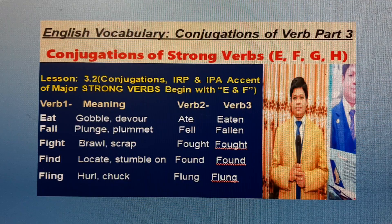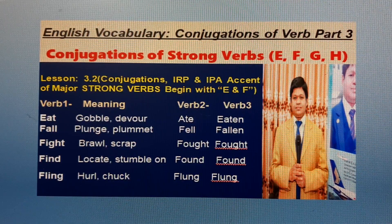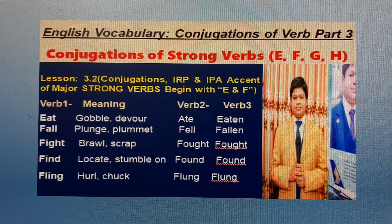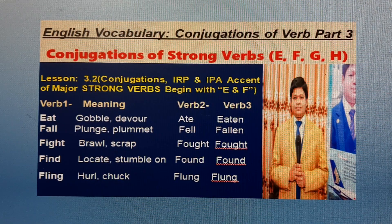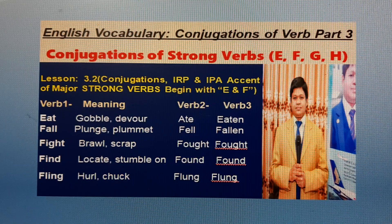Lesson 3.2: Conjugations with IRP and IPA accents of major strong verbs beginning with E and F. In this lesson, B1 indicates present form, B2 past form, and B3 past participle form of the content verb.